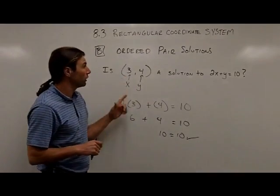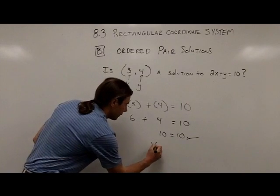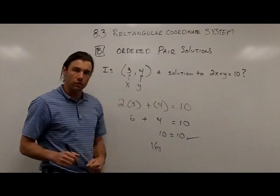So the ordered pair 3, 4 is a solution to this equation. So I would write, yes, it is a solution.